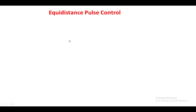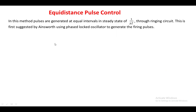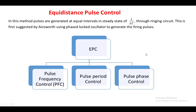In equidistance pulse control, pulses are generated at equal intervals of time, i.e., 1/pf, where f is the frequency of the system, through a ringing circuit. This was first suggested by NV Smooth using a phase-locked oscillator to generate firing pulses. The equidistance pulse control has three types: pulse frequency control, pulse period control, and pulse phase control.